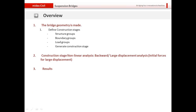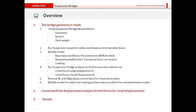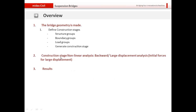For the completed state analysis, since we don't require non-linear behavior, we remove the non-linear and suspension bridge analysis control data, modify the model for additional loading and boundary conditions, and run a linear small displacement analysis. Then we move on to define the construction stage analysis model by adding construction stages, defining structure, boundary and load groups, and generating the construction stages. Since we've already obtained the initial forces for large displacement, we proceed directly to run the backward construction stage analysis.